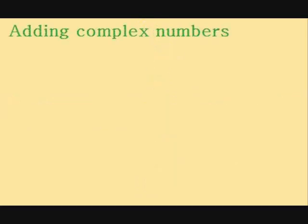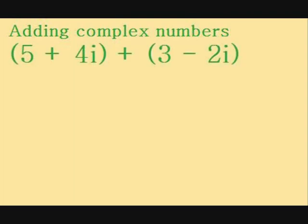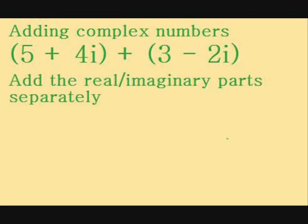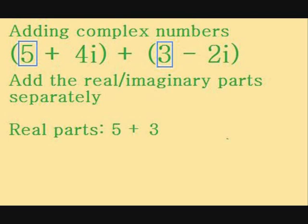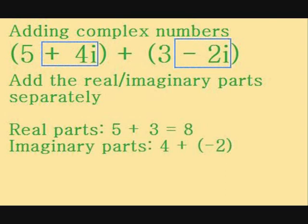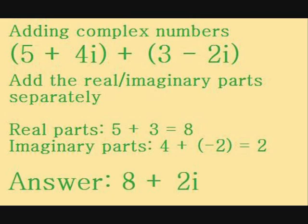So, let's do some basic operations with complex numbers. Addition is easy. We just add the real parts and the imaginary parts separately. Take this example: 5 plus 4i plus 3 minus 2i. First, add the real parts, 5 plus 3 equals 8, and then the imaginary parts, 4 minus 2 equals 2. So, the answer here is 8 plus 2i.